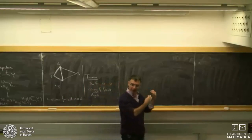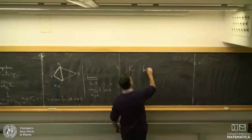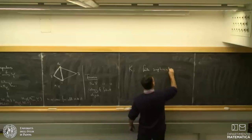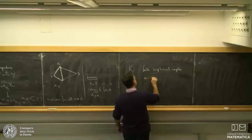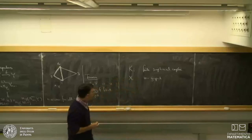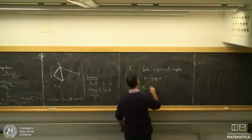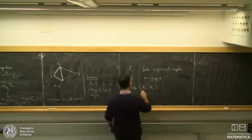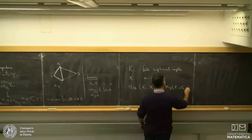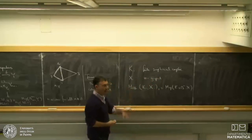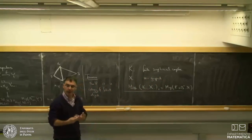Once you have Reedy fibrancy: if K is a finite simplicial complex and X is an infinity groupoid, then we can form an infinity groupoid of maps from K to X — the n-simplices of this are just maps from K × Δ^n to X. It turns out that makes sense and is again an infinity groupoid, and you can form loop spaces and so on using Reedy fibrancy.